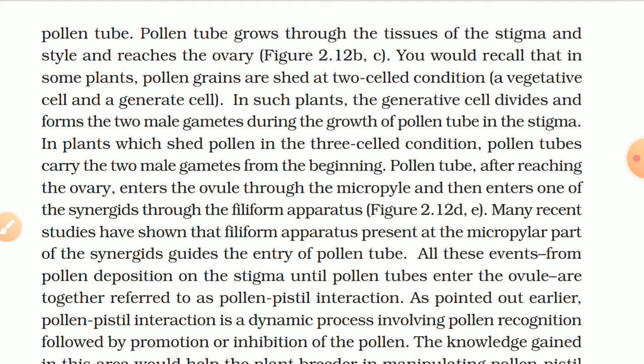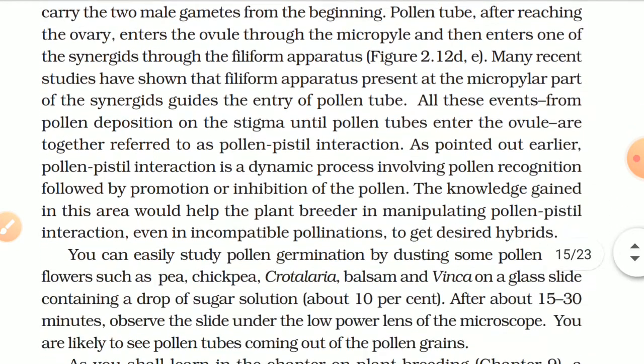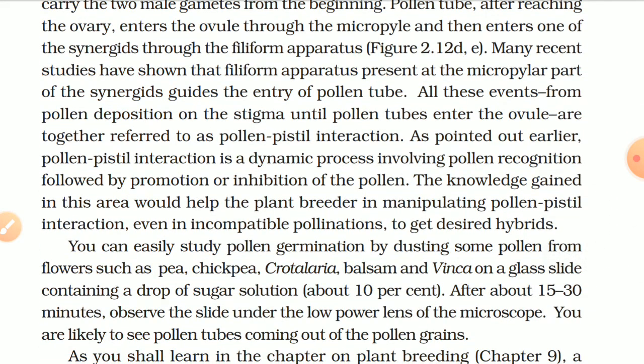All these events — from pollen deposition on the stigma until the pollen tube enters the ovule — are together referred to as pollen-pistil interaction. Pollen-pistil interaction is a dynamic process involving pollen recognition followed by promotion or inhibition of the pollen. The knowledge gained in this area would help plant breeders in manipulating pollen-pistil interaction even in incompatible pollinations to get desired hybrids.